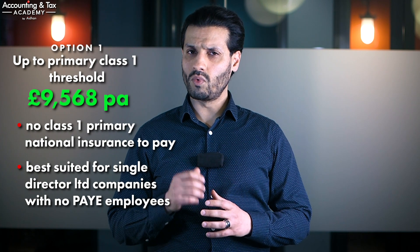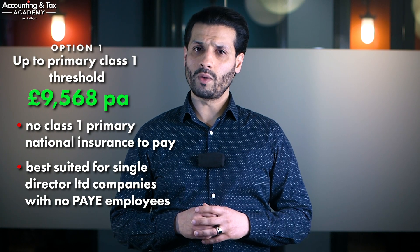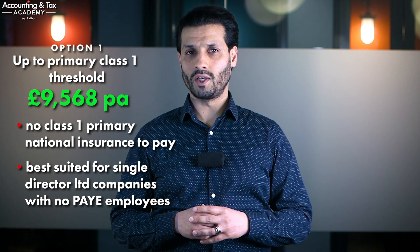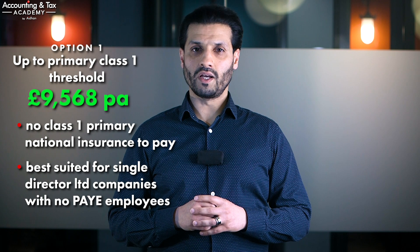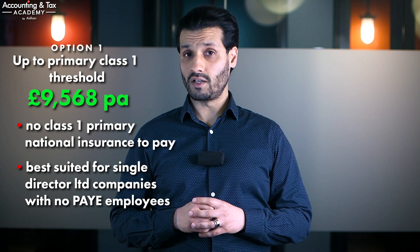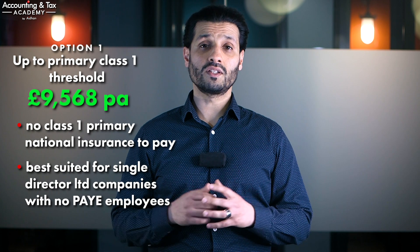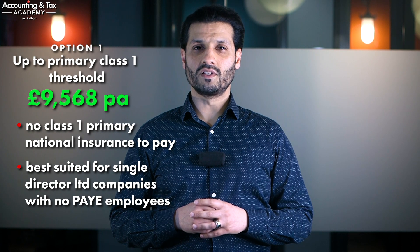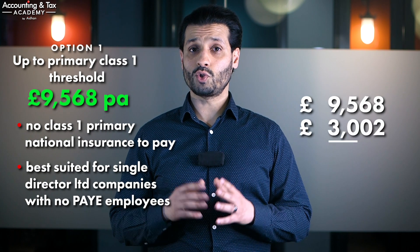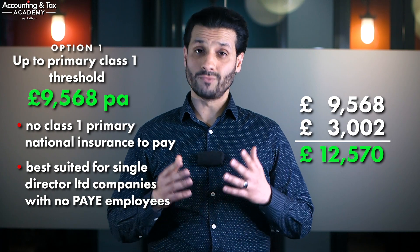There are non-tax reasons why you might pay yourself a higher salary. Under option one, your company will pay a very small amount of class one secondary national insurance of about £100 for the tax year, but that is more than offset by a corporation tax saving of about £145 your company will receive at this level of director salary. The other advantage is that you can take a further £3,002 per annum as a tax-free dividend, since £9,568 plus £3,002 takes you up to your personal allowance of £12,570 — so if you don't use it, you will lose it.